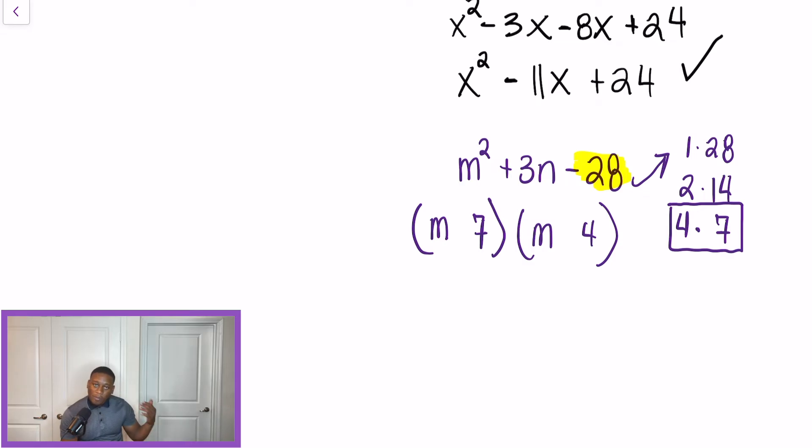So, when C is negative and we have a negative 28, that means the factors, one's positive, one's negative. So, if we focus on our middle term, that B, we have a positive 3. And my very helpful tip, when we have opposite signs for our factors, the larger number or the larger factor will always take the sign of the middle term. So, automatically, I already know that 7, being a larger number, has to be positive if I want to get a positive 3 when I add. And then 4 is negative.